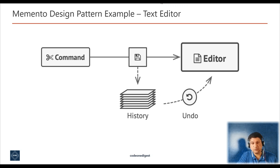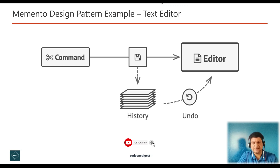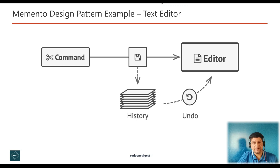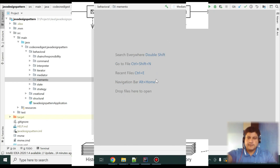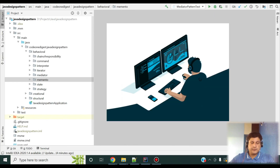Let's discuss an example. Imagine you are creating a text editor app. In addition to simple text editing, your editor can format text, insert inline images, etc. At some point you decide to let users undo any operation. For this, your app should record the states of all objects and save them in some storage. Later, when the user decides to revert an action, the app fetches the latest snapshot from the history and uses it to restore the state of all the objects.